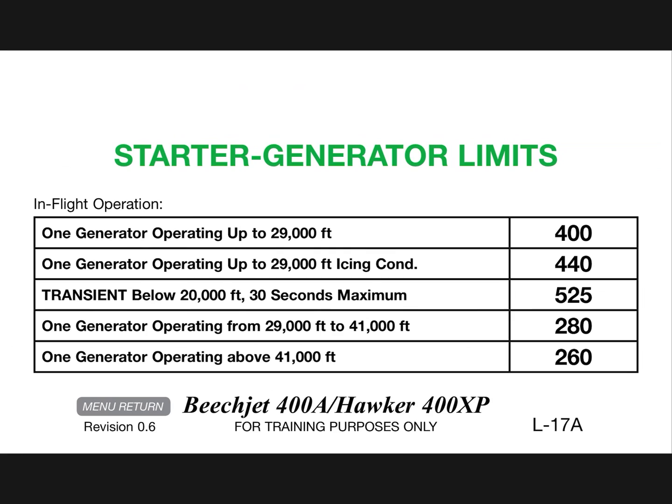Generator starter limits for in-flight operations: one generator operating up to 29,000 feet is 400 amps. One generator operating up to 29,000 feet in icing conditions is 440 amps. Transient below 20,000 feet 30 seconds maximum 525 amps. One generator operating 29,000 to 41,000 feet is 280 amps. One generator operating above 41,000 feet is 260 amps.